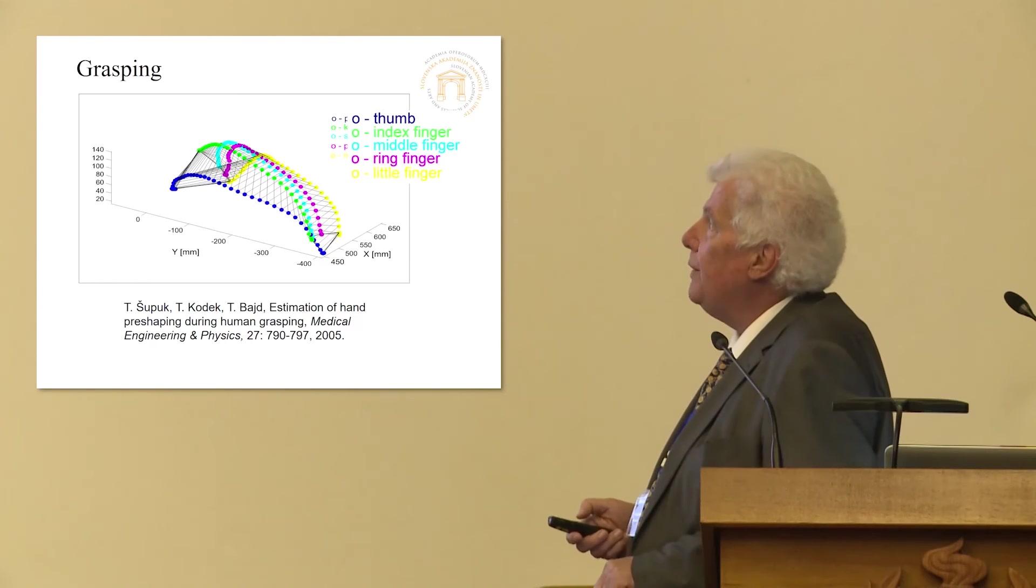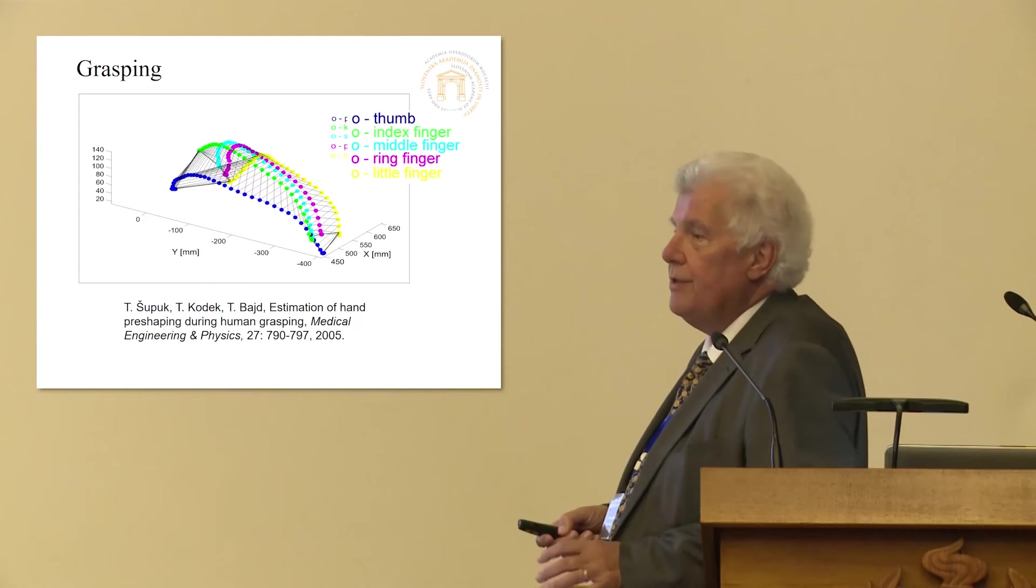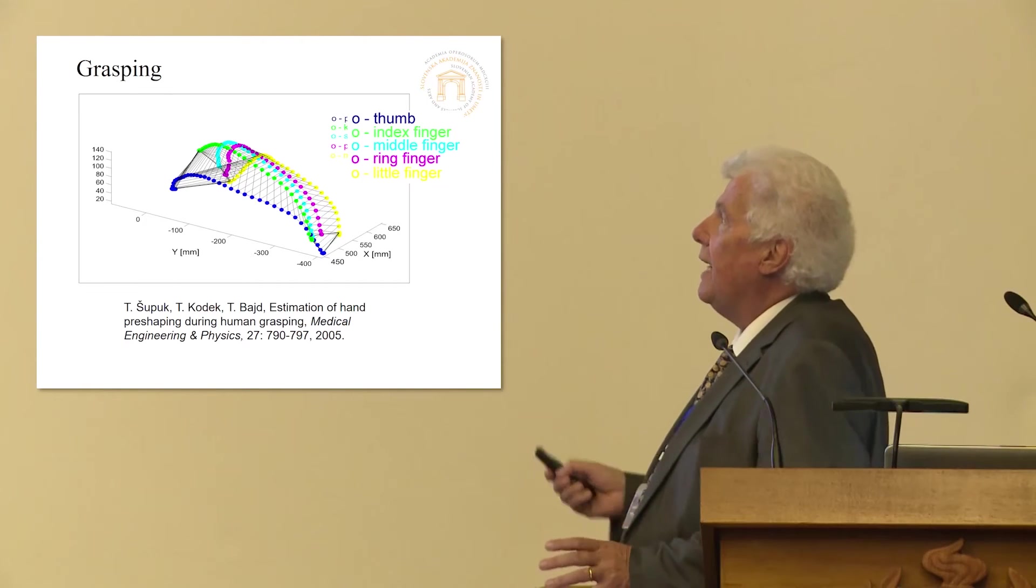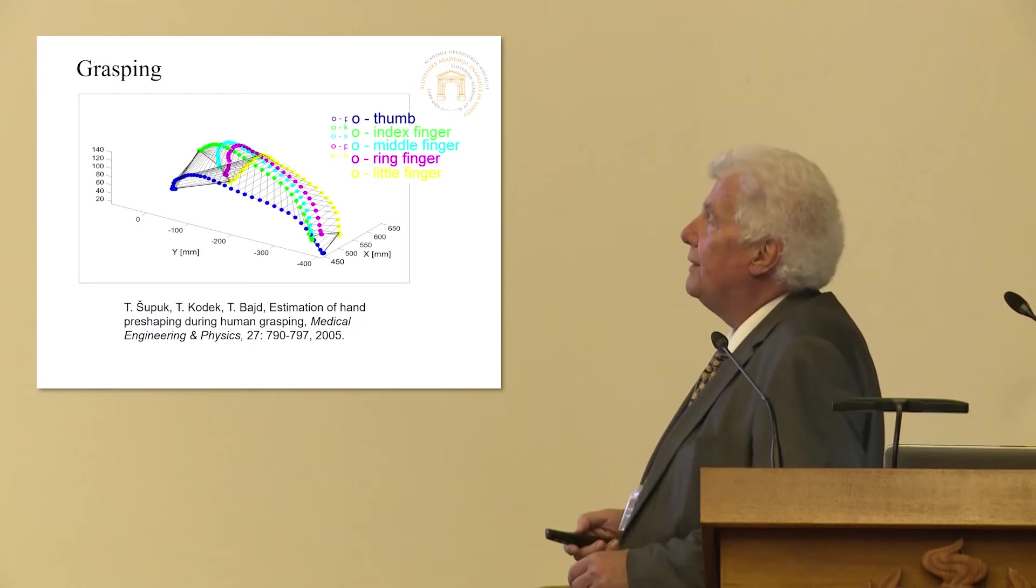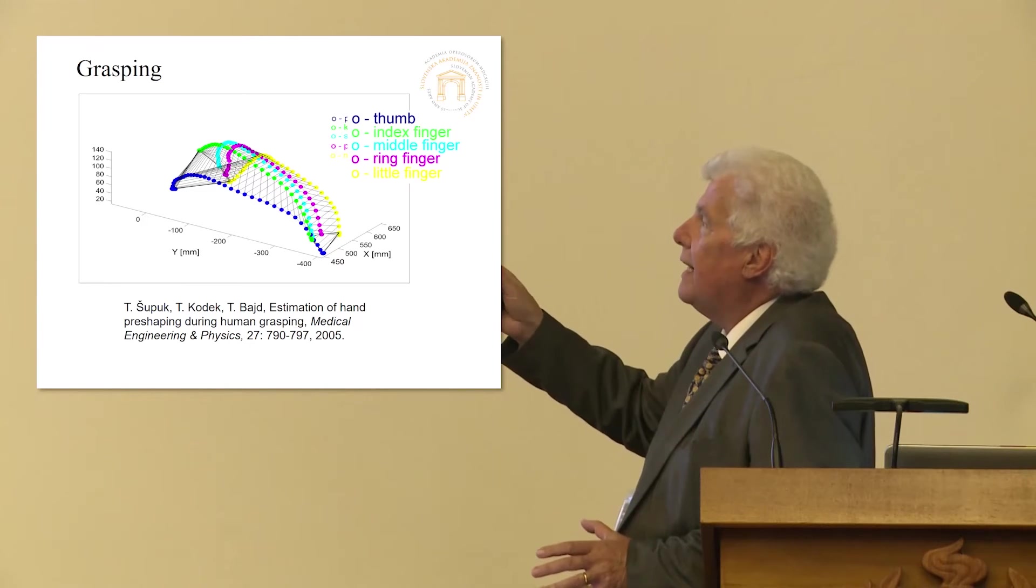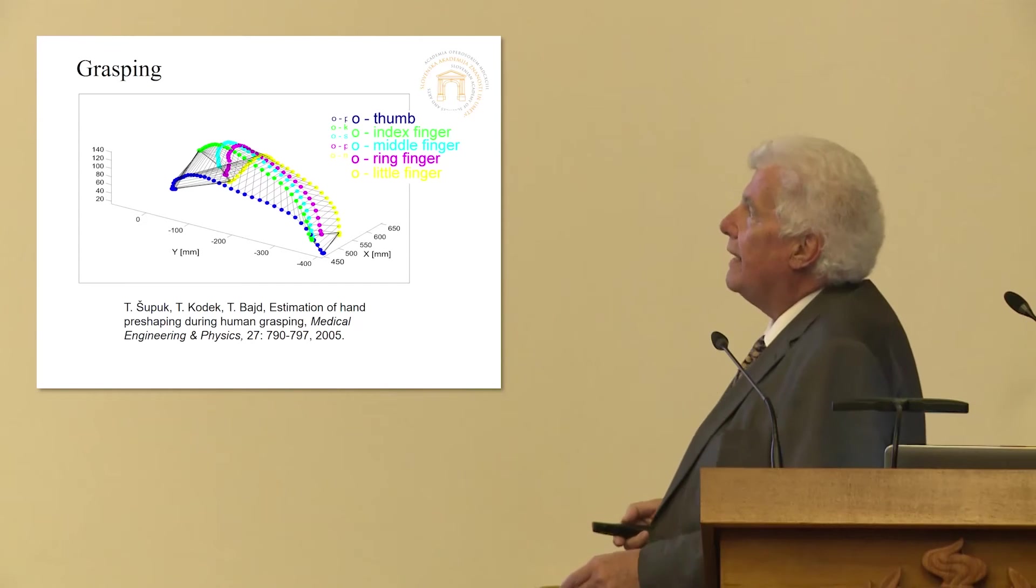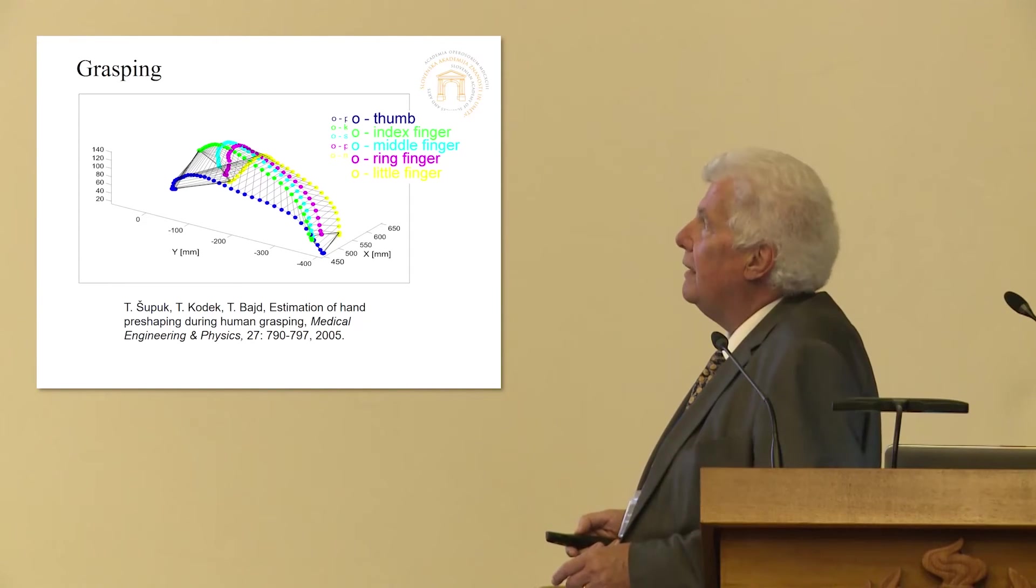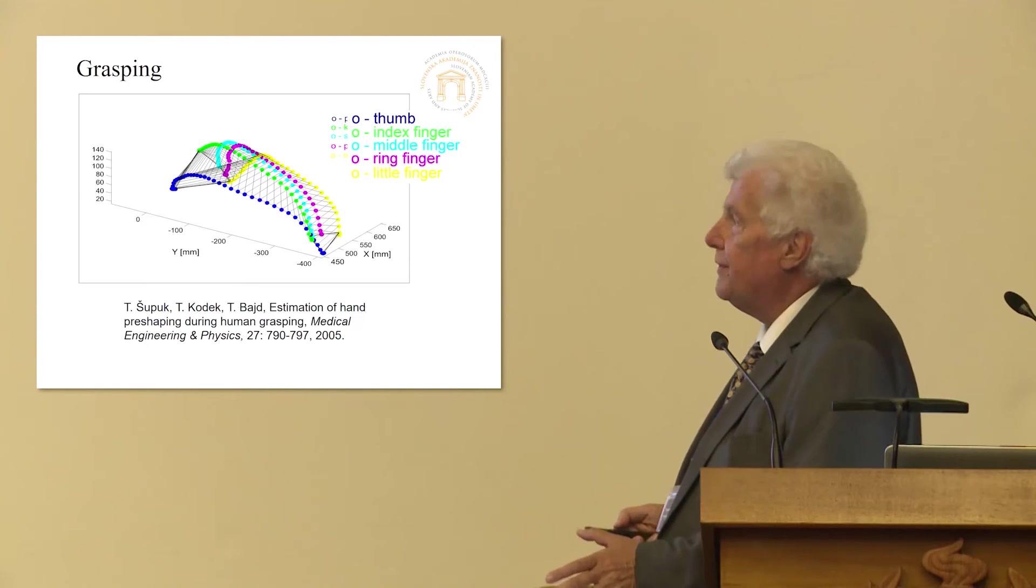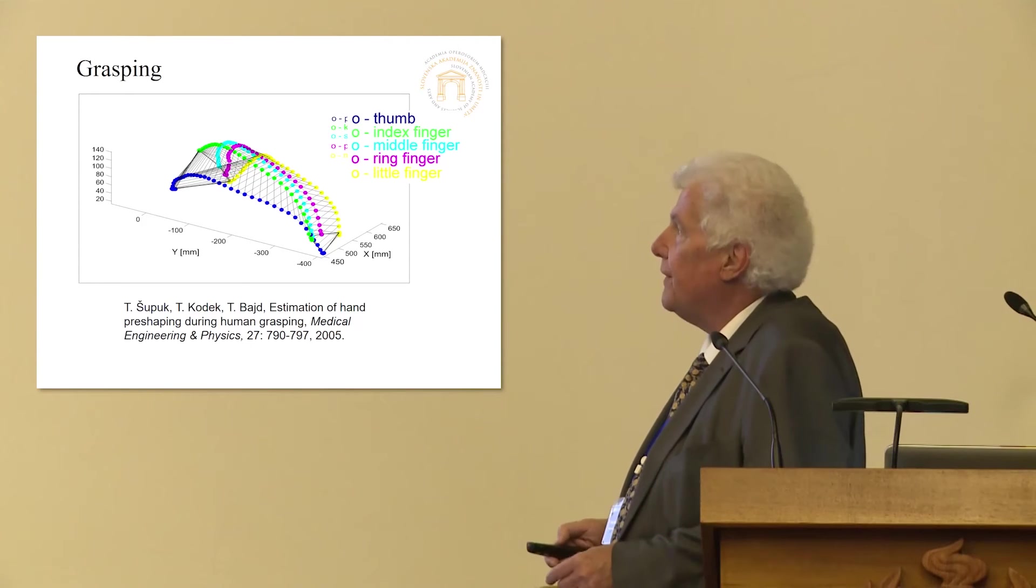So in this way, we established an area, which we called Pentagon. So the tips of all the fingers, and we measured it by the help of these markers. And we found out that this Pentagon is first increasing, it has a bell-shaped curve, and then is again decreasing when coming close to the object. And interesting enough that the horizontal projection of this trajectory is a straight line, which is already determined by Professor Tomovic.